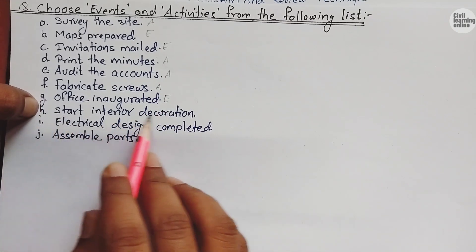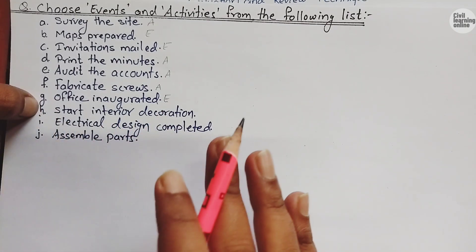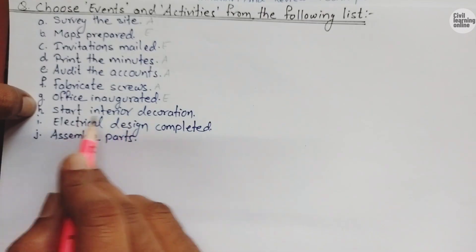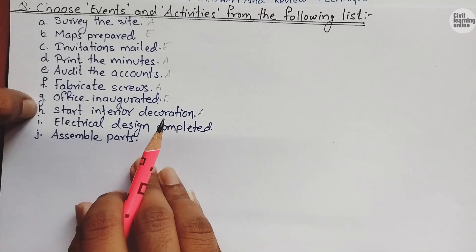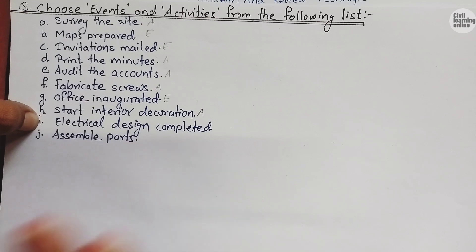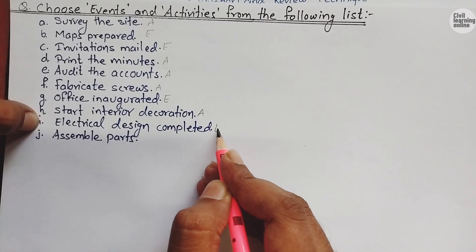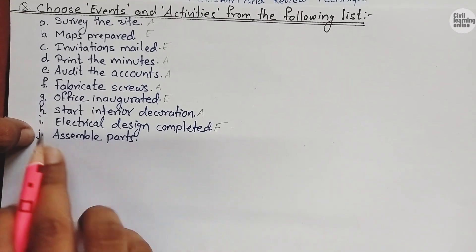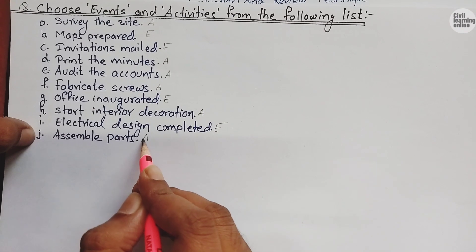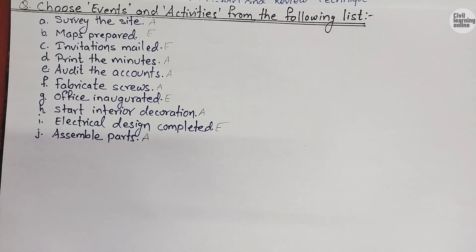'Start interior decoration' — we are yet to start interior decoration, it is not started yet, so it is an activity. 'Electrical design completed' — the electrical design is already completed, so it is an event. 'Assemble parts' — parts are not assembled yet, we have to assemble them, so it is an activity. I hope you understood this concept about events and activities.